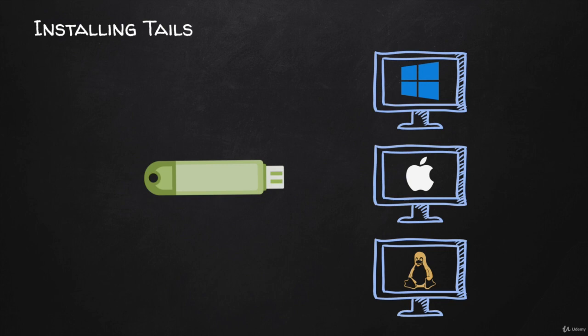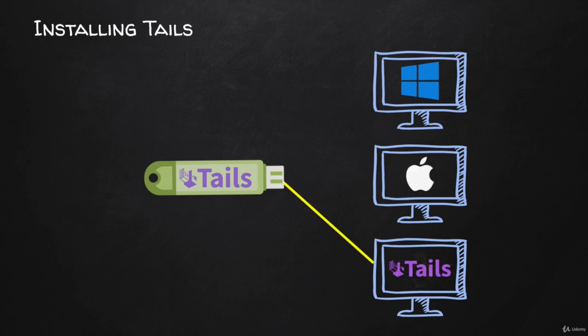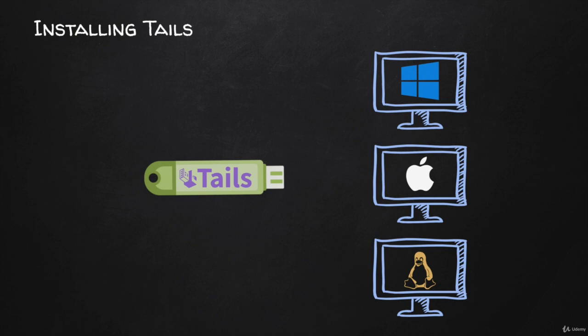Now that we understand what Tails is and how it works, in this lecture I want to show you how to install Tails on a USB stick so that we can start Tails on any computer that runs any operating system. The instructions I'm going to show you will work on Windows, Linux, and OSX using the exact same programs and steps. If you follow them and face any problems, please ask us in the Q&A section and we'll respond within 15 hours.